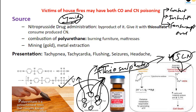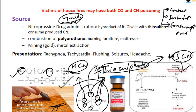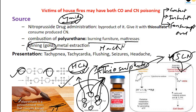In house fires, especially in developed countries like the USA, furniture coated with polyurethane contains cyanide in its compound structure. When this polyurethane material burns, cyanide is released as hydrogen cyanide gas, and a person trapped in the house fire can be poisoned by it. Additionally, in gold mining and metal extraction, large amounts of sodium cyanide are used — it is sprinkled on gold mines to extract gold — so workers may get cyanide poisoning during gold extraction.